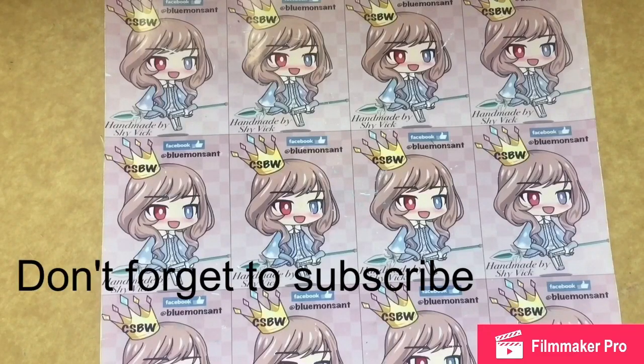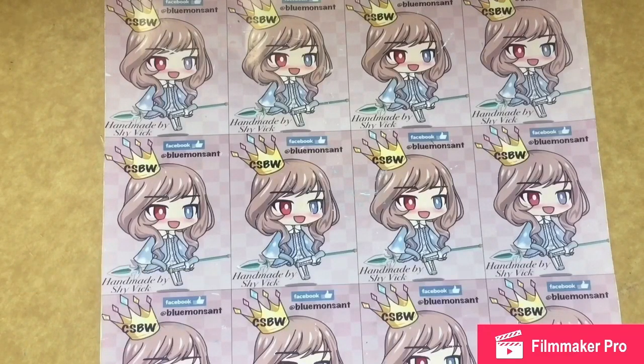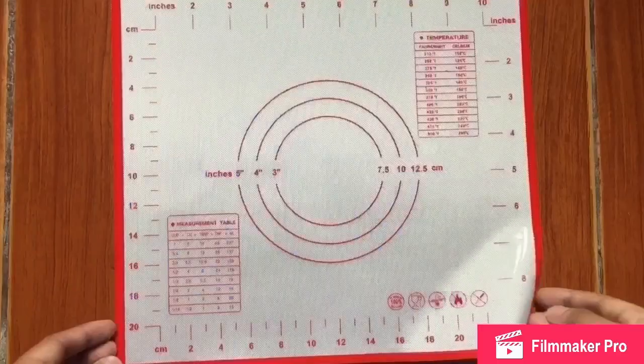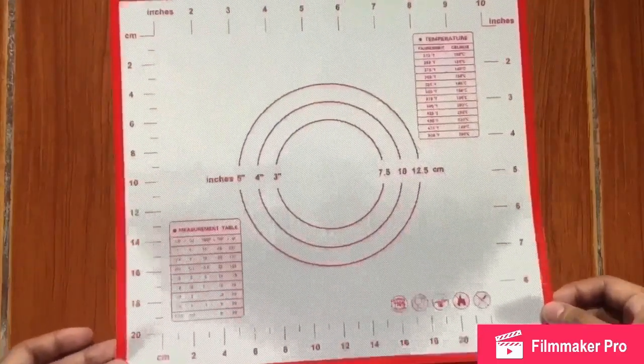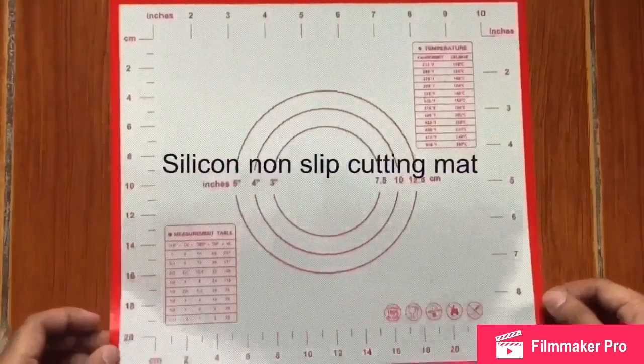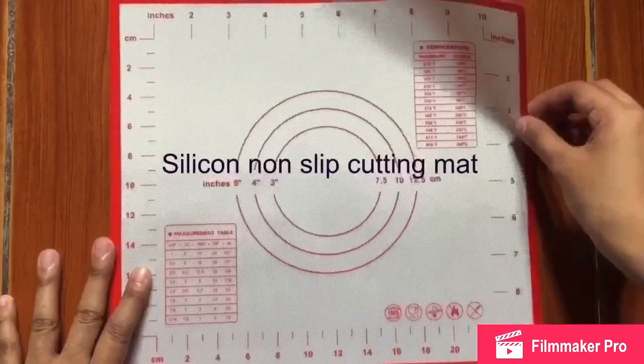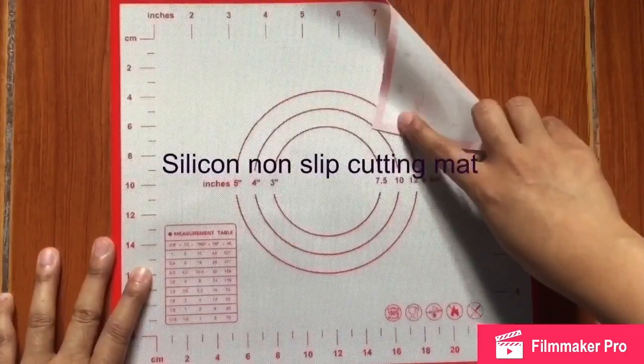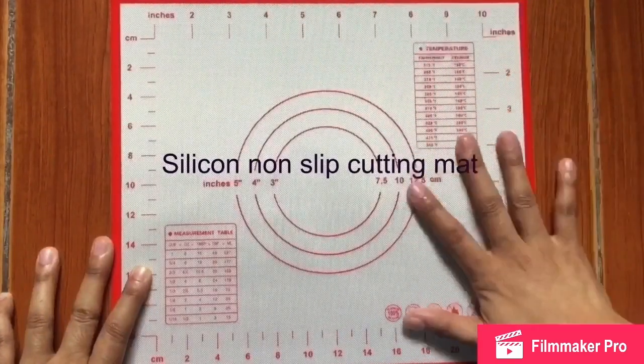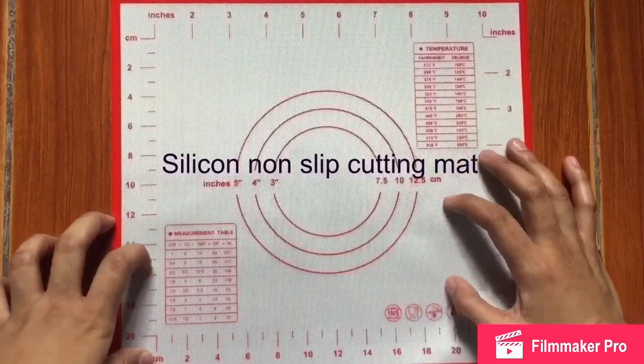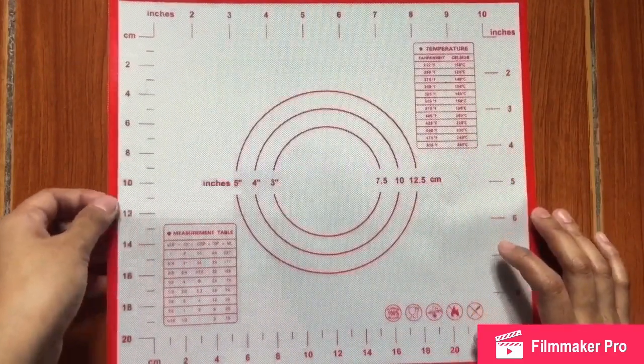Hi guys, today I'm going to share with you the tools that I use for air dry clay or ADC projects and creation. So sit back and relax. First, I do have here the cutting mat and this one is a silicone type. It's nonstick and this is actually a good one since it does have some guide for the inches, centimeters, measurement table, temperature from Fahrenheit to Celsius, and other information.